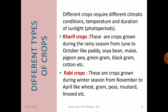Let us see the differences between these two crops. Kharif crops are grown during the rainy season from June to October, like paddy, soya bean, maize, peas, green gram, black gram, cotton, etc. Rabi crops are grown during the winter season from November to April, like wheat, gram, peas, mustard, linseed, etc.